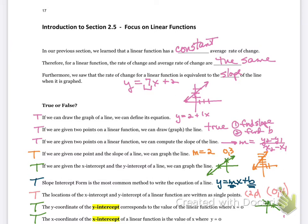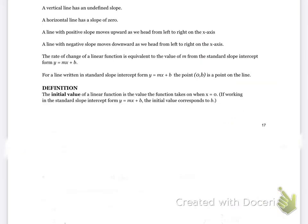Likewise, the x-coordinate of the x-intercept of the linear function is the value of x when y is 0 — also true. That's the point where your y is 0, and that's called the root of the function. A vertical line has an undefined slope — that's true. Since slope is change in y over change in x, and the change in x is 0, this is undefined.